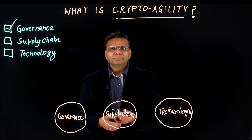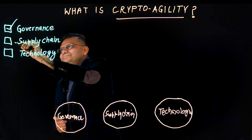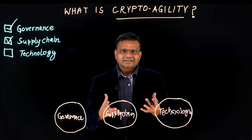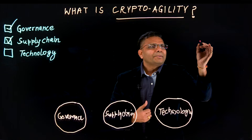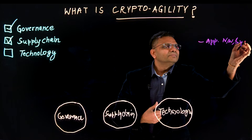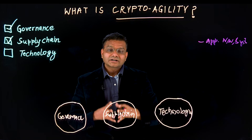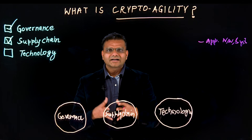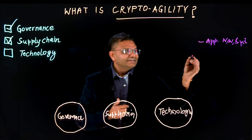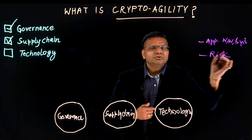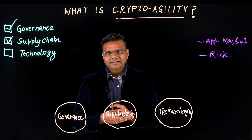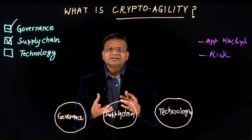The second component of the cryptoagility framework is supply chain. Supply chain means understanding the enterprise infrastructure landscape — knowing about the applications, the network, and the systems. It is important to understand what cryptography is being implemented in each of these assets acquired from multiple different vendors, because it creates risks you must understand to ensure cryptography compliance with the regulations you need to abide by.